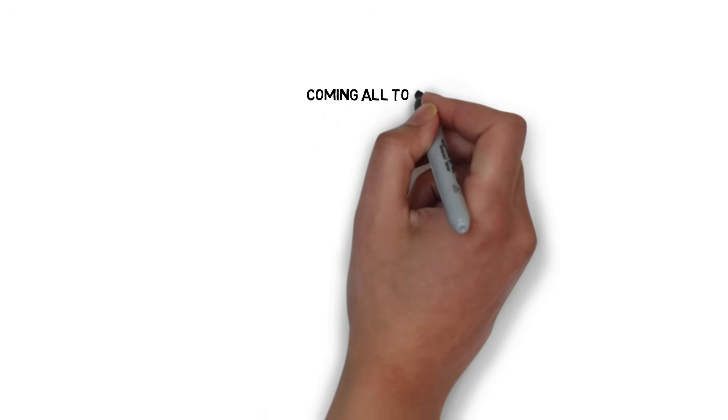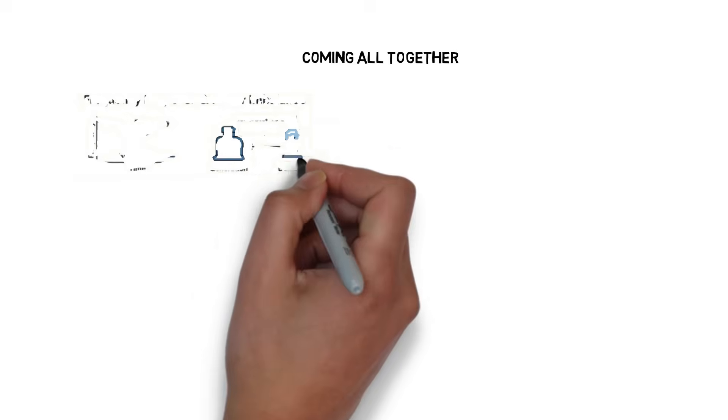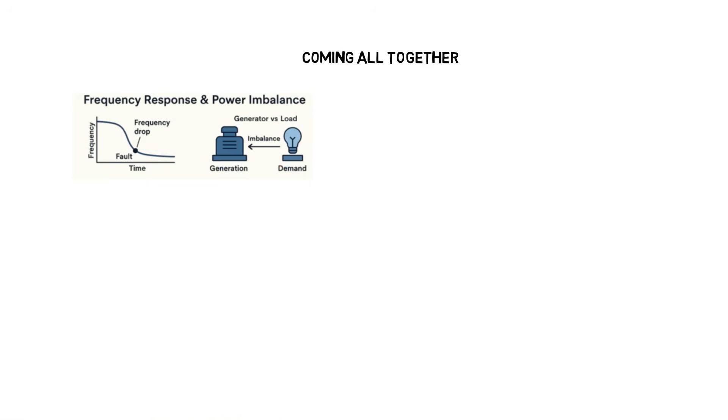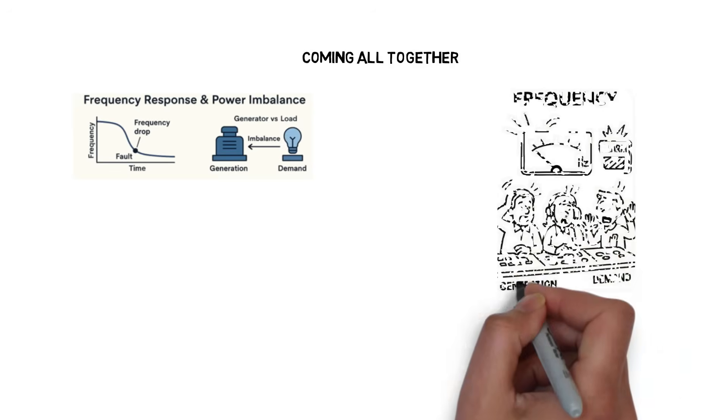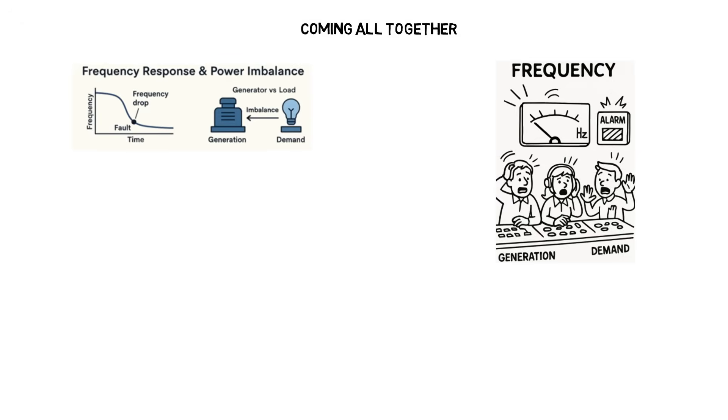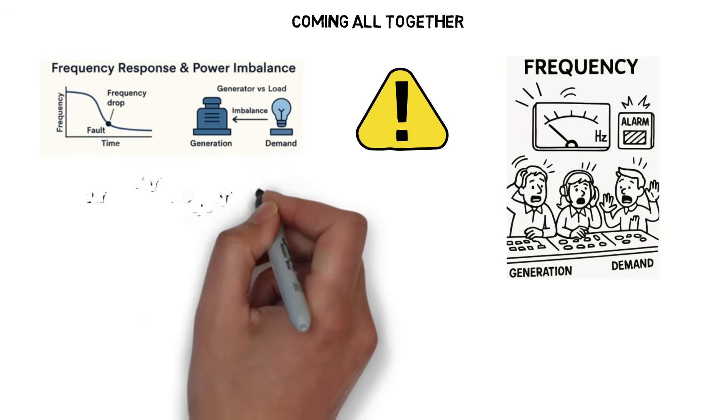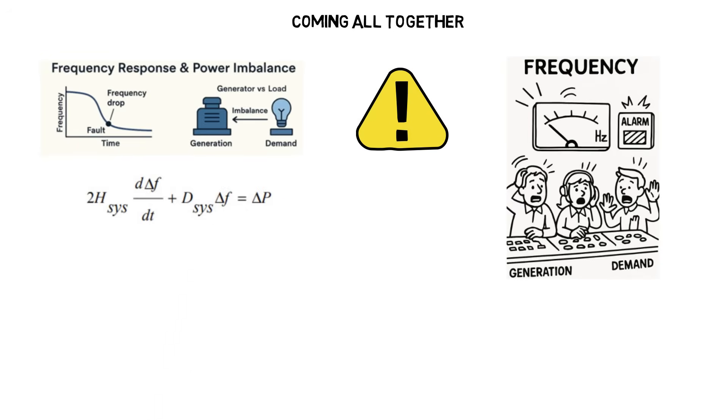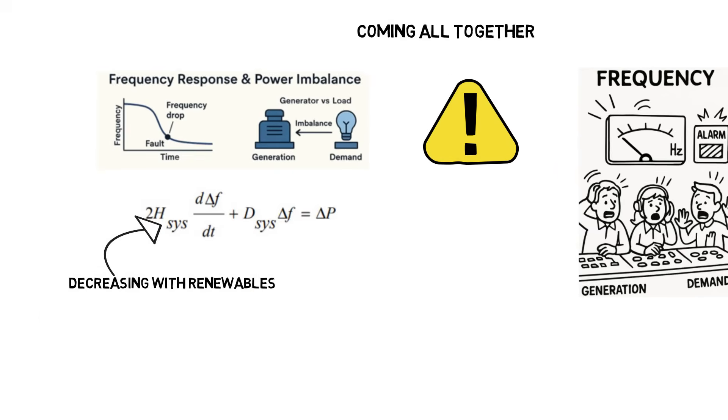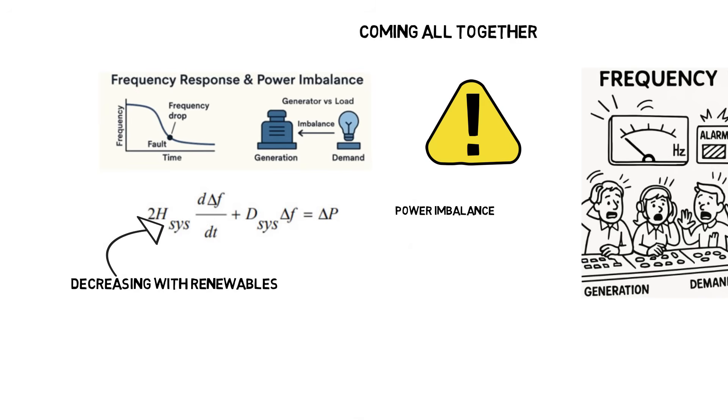When electricity generation perfectly matches demand, the frequency holds steady, locked at 50 hertz. But when that balance is disturbed, say demand spikes suddenly, or a fault hits the system, the frequency begins to shift. This dynamic is captured by the swing equation. Two times the system inertia, multiplied by the rate of frequency change, plus the damping effect, equals the power imbalance.